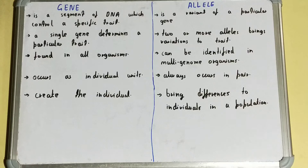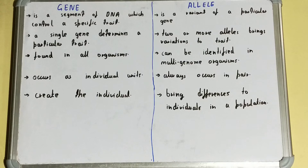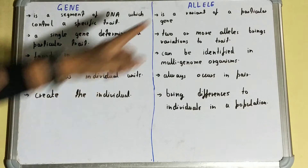For example, you can take the example of eyes — there are different eye formations or eye colors in different individuals. Or you can take the example of hand lines, which are different in different individuals. That is because of alleles.